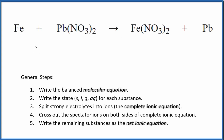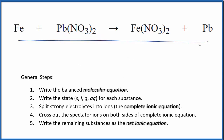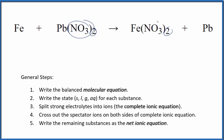Let's write the balanced net ionic equation for Fe plus Pb(NO₃)₂. This is iron metal plus lead 2 nitrate. The first thing we need to do is balance the molecular equation. I can see I have two nitrate ions in the reactants and two nitrate ions in the products. I have iron and iron, lead and lead. So it's already balanced.